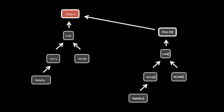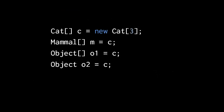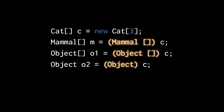So the consequence of this is that we can assign a cat array object to not just a cat array reference, but also to a mammal array reference, assuming mammal is an ancestor of cat. And then also we can assign the same object to an object array reference, and then also to just a plain old object reference. Implicitly in these cases, we are upcasting. When you assign c to m, we have to upcast from cat array to mammal array. And when we assign c to o1, we have to upcast from cat array to object array. But we don't have to explicitly write these casts, the compiler will just assume they are there.